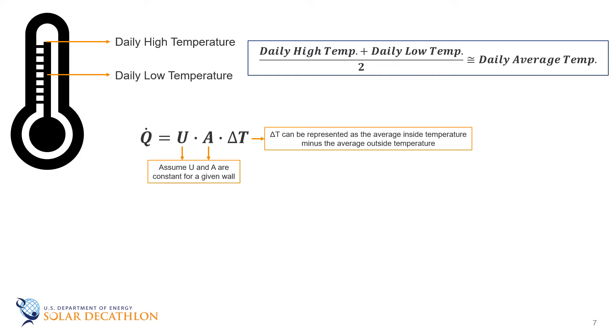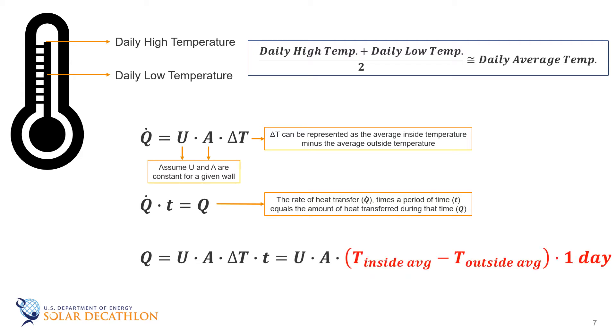If we multiply the rate of heat transfer Q dot times the period of time, that's little t, we will get the amount of heat transferred during that time. Writing this out, we see that Q equals U times A times delta T times little t, which is time. This equation, with t equals 24 hours to represent the day, and the delta T being the inside average temperature minus the outdoor average temperature will approximate the heat transferred during each day.